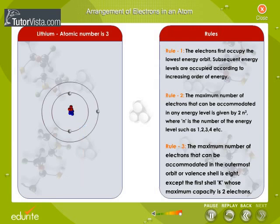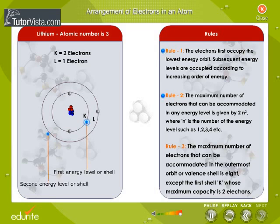Lithium has 3 electrons around its nucleus. According to rules 1 and 2, the maximum capacity of the first K shell is 2 electrons. Hence, 2 electrons will move to the second energy level or shell.